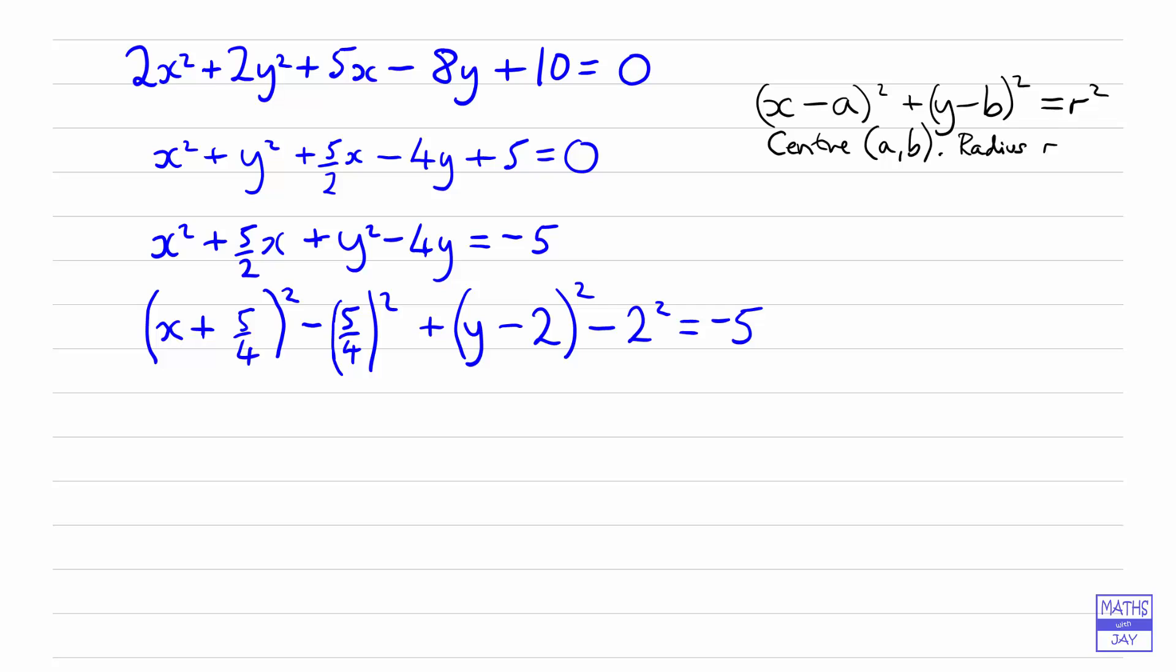So we're nearly there, let's just write down the brackets on the left hand side so x plus 5 over 4 squared plus y minus 2 squared so we're looking really good there, the left hand side is just what we want so we could actually write down the coordinates of the centre already we just need to do a bit of work on the right hand side to work out what the radius is going to be so we'll start off with our negative 5.